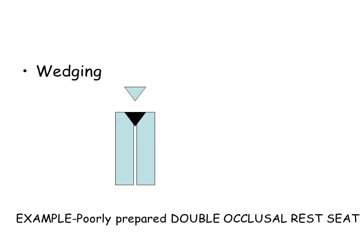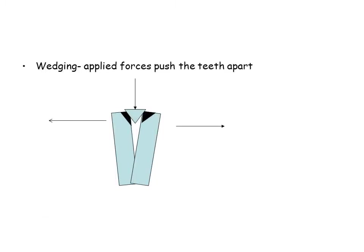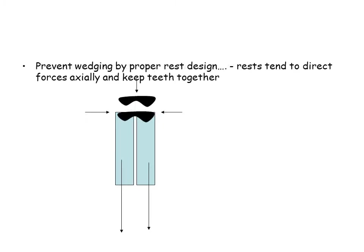Wedges inadvertently created may be damaging to the teeth, creating areas of fluid impaction, inflammation, bone resorption, and eventual tooth loss. Correct preparation design will prevent wedging. The orientation and correct preparation of the rests will draw the teeth together rather than push them apart. Forces are directed down the long axis.